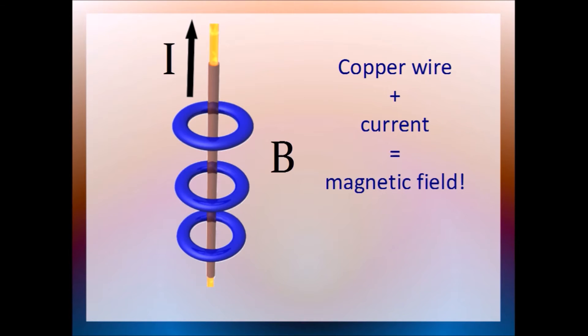Imagine you have a piece of copper wire like this, and you pass a current through it. Here the current goes from the bottom to the top of the wire. As usual, we label it as capital I. Hey, what's happened? A magnetic field has appeared.